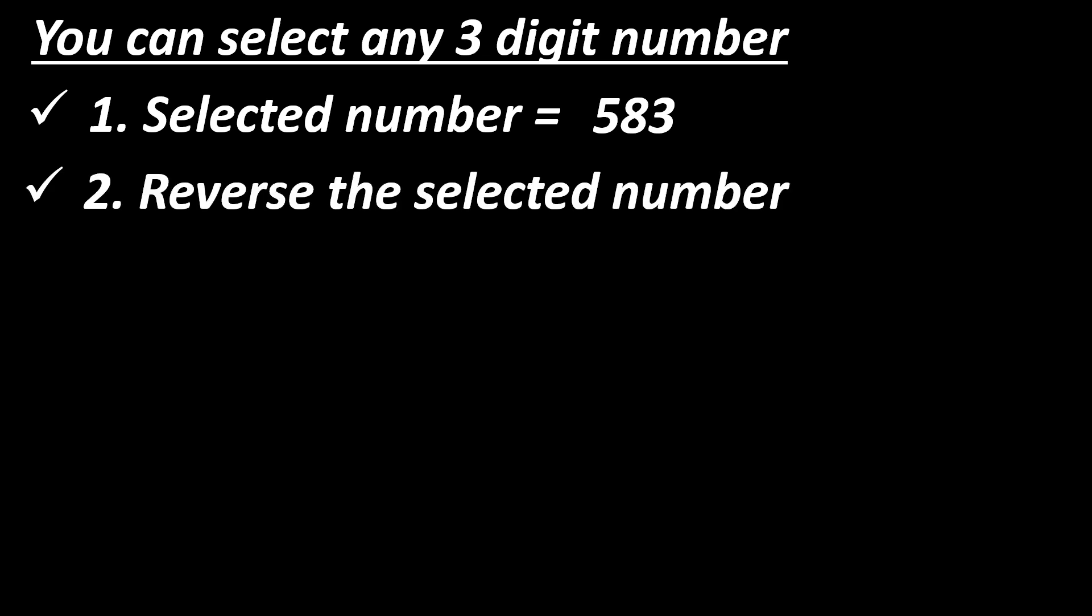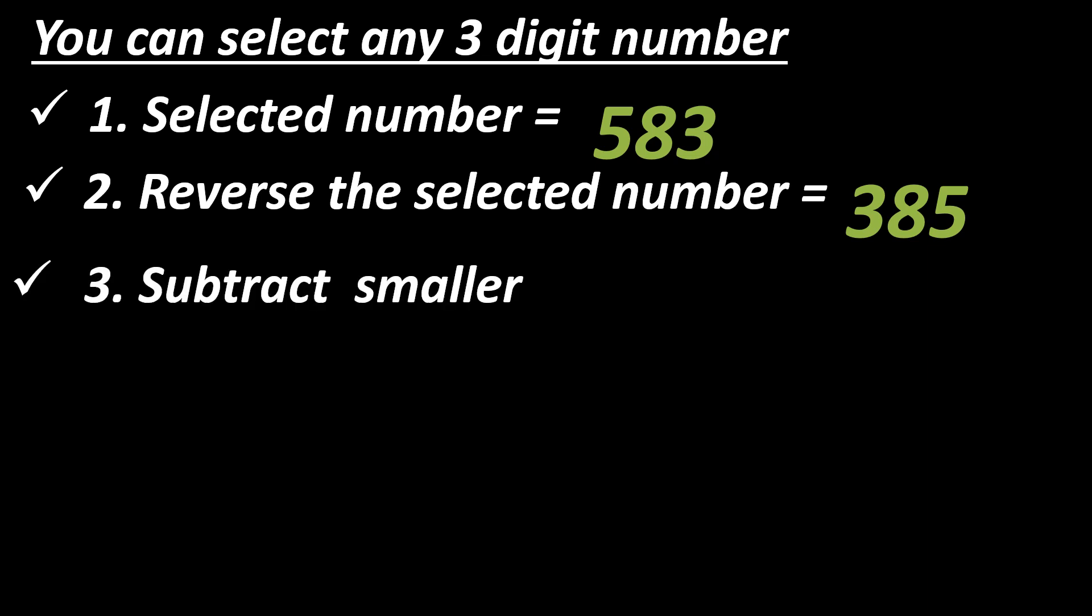You can select any three digit number. Say, for example, the selected number is 583. Reverse the selected number. Here we selected 583, so our reverse number will be 385. Now we have two numbers, one we selected and one we reversed. We need to subtract the smaller number from the bigger number.